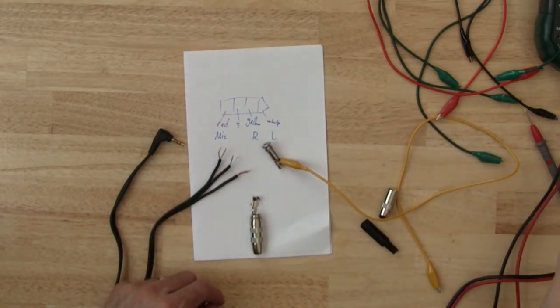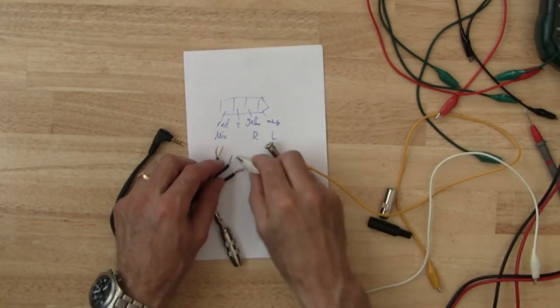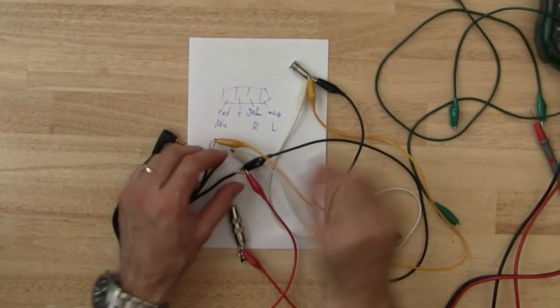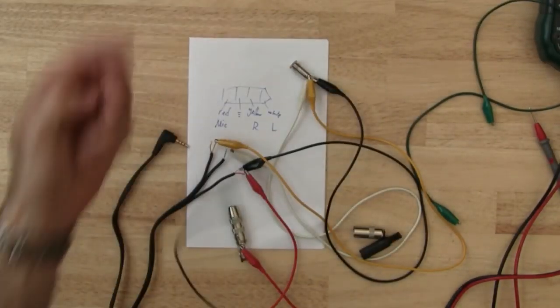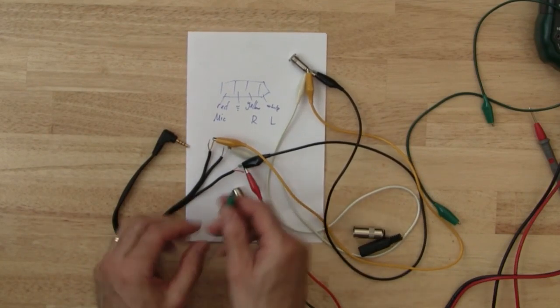And for the left signal up to the white. Skipping ahead a little bit I've just connected the guitar jack signal lead to the red microphone wire and I also need to ground the sleeve. I like to use black and green wires for ground.